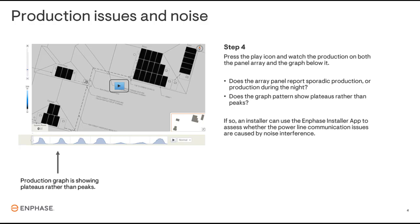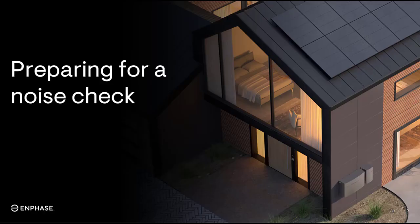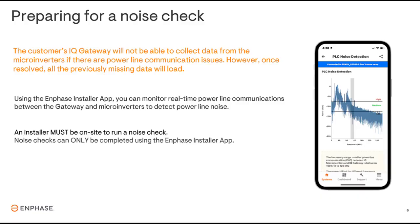These are clear indications that there are communications issues that could be attributed to electrical noise. Once these have been identified, a service tech will need to be sent to the site to confirm the findings and implement any corrective actions. When the IQ Gateway loses communications with the microinverters, the gateway also loses its ability to collect data from the microinverters. The inverters will continue producing power and collecting data, but they lose the ability to report back to the gateway.